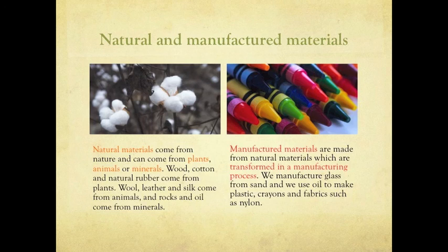Natural materials come from nature, and can come from plants, animals, or minerals. Wood, cotton, and natural rubber come from plants. Wool, leather, and silk come from animals, and rocks and oil come from minerals.